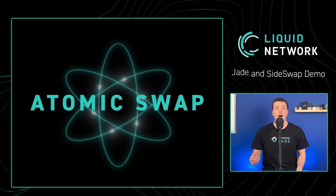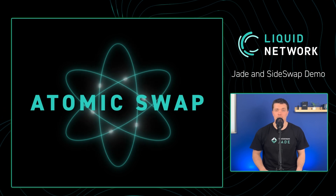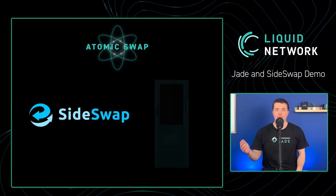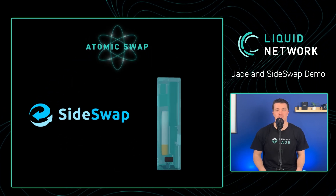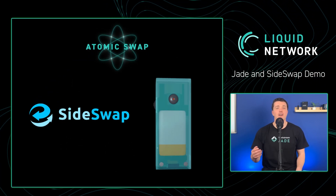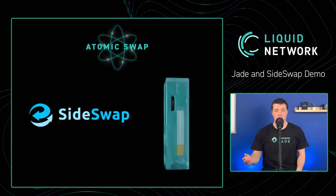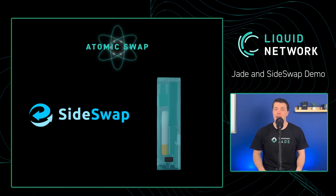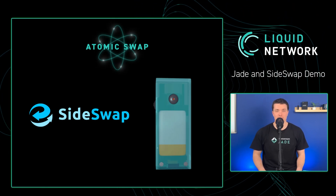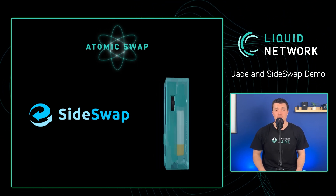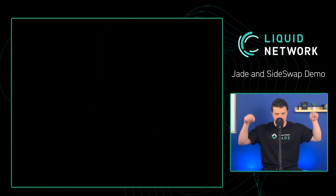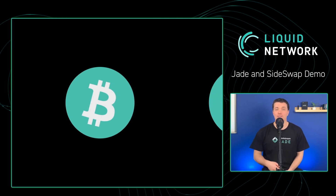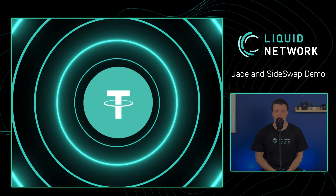Now that we understand the benefits of atomic swapping, let's perform a swap on Sideswap using our Blockstream Jade. If you are unfamiliar with either product, links to our previous Jade and Liquid Decipher videos will be in the description box below. With that, let's swap some Liquid Bitcoin for some Liquid Tether.